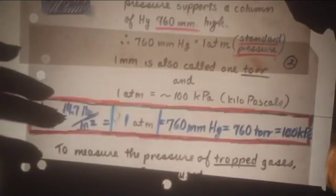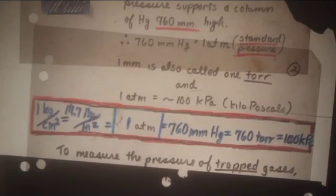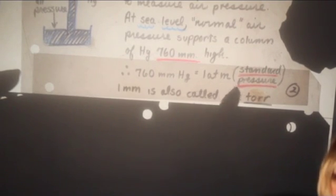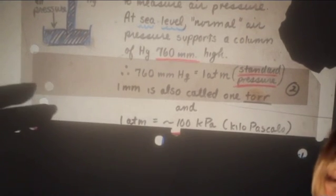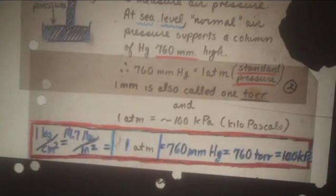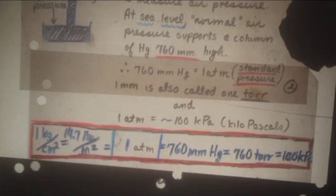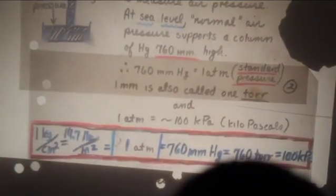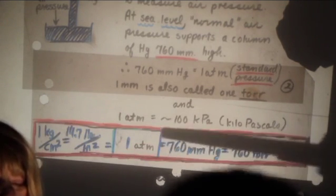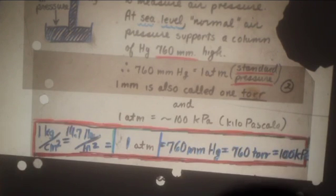And there are still more units. One of these little millimeters is called a torr. So 760 torr is the same measurement as 760 millimeters of mercury. In addition, a French unit called a kilopascal, 100 kilopascals is equal to one atmosphere. So what I've created here is a conversion. Everything's in one place. So you're going to box this in red and highlight. We have one kilogram per square centimeter, 14.7 pounds per square inch, 760 millimeters of mercury, 760 torr, and 100 kilopascals.